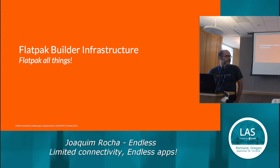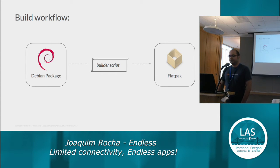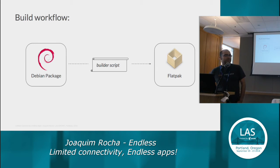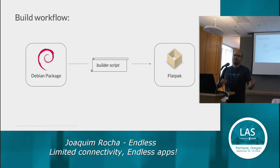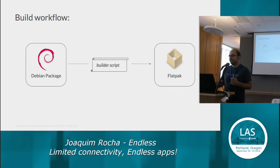I'll talk a little bit about the Flatpak infrastructure we have. Even though the Flatpak builder is quite nice, we actually use Debian packages to build our Flatpak apps using a custom feed. The reason for that is our system, even though it's OSTree, it's built out of a Debian base, so we already have that. While Builder works very well if you have one application, if you have many, you don't want to be compiling the same dependencies all the time because it will take a long time. In the future we might change that.